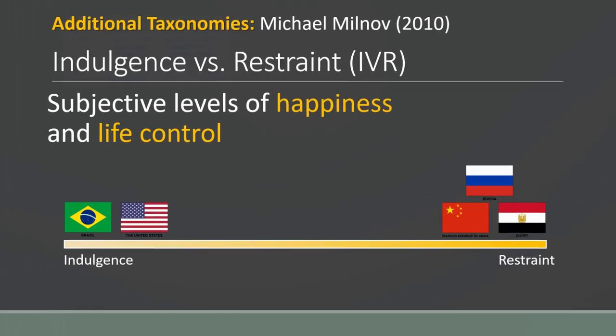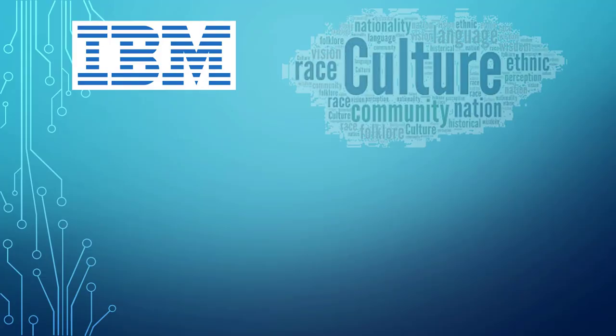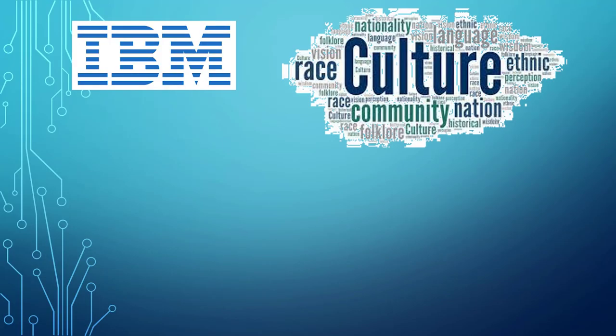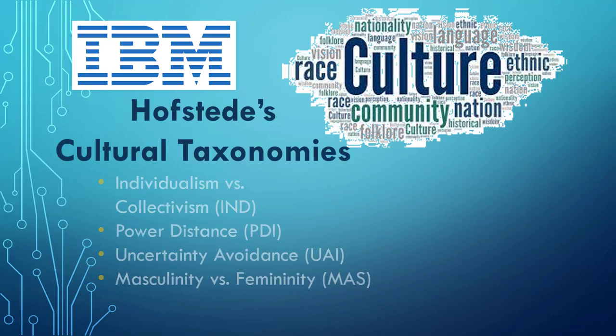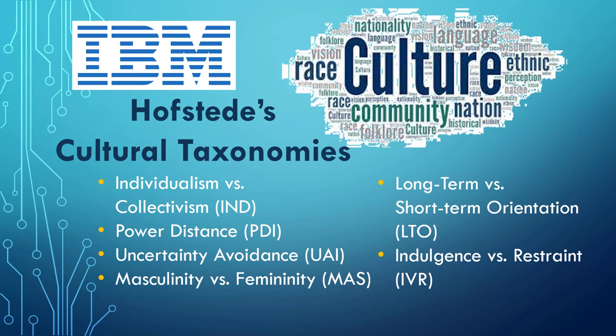So now you not only know what IBM has to do with culture, but you should have a better understanding of Hofstede's cultural taxonomies—both the original four and the two later additions. Of course, Hofstede's taxonomies are not the only way to look at culture. Now you can understand some of the newer taxonomies you may come across.